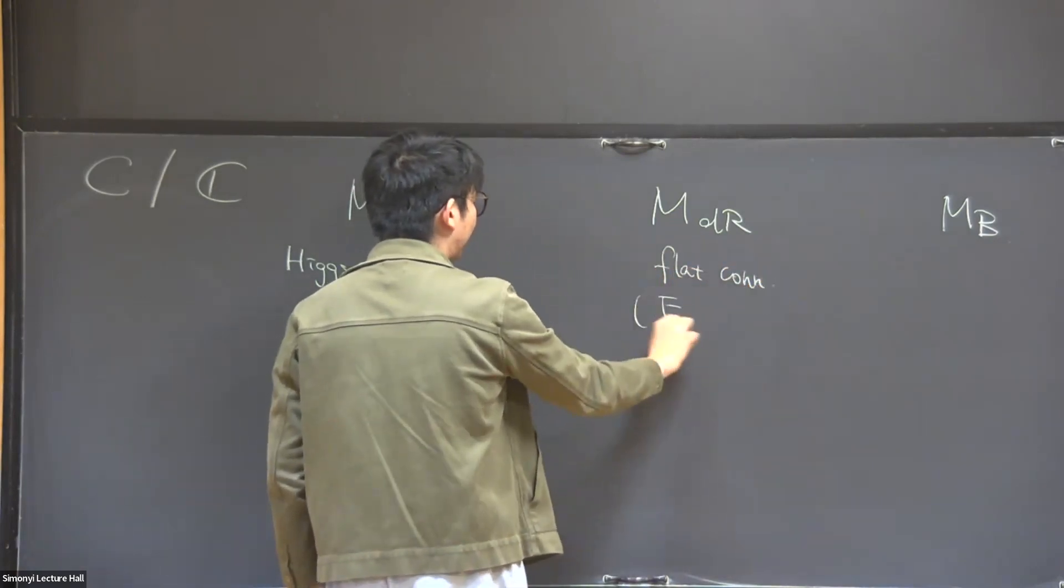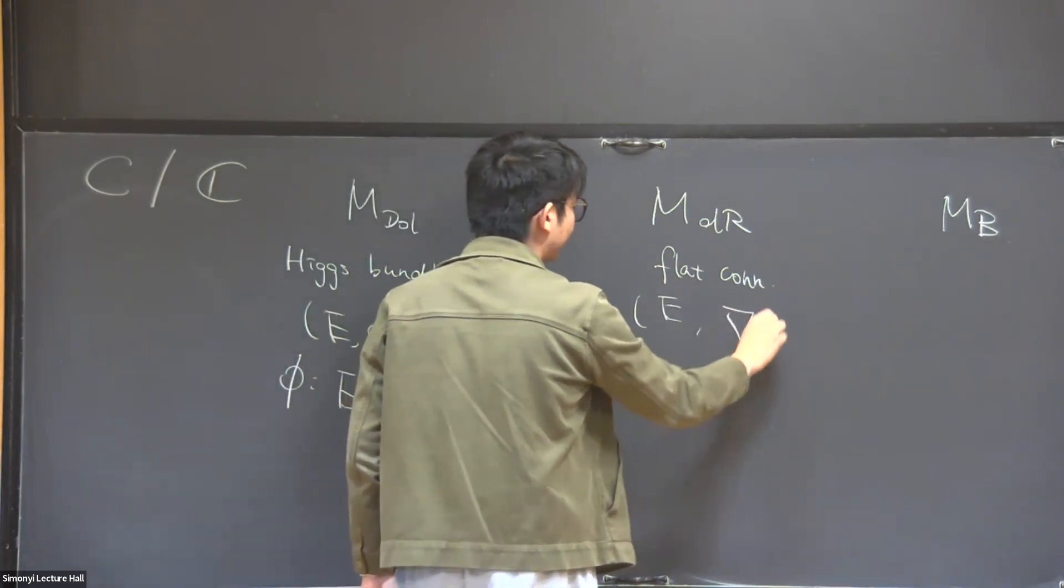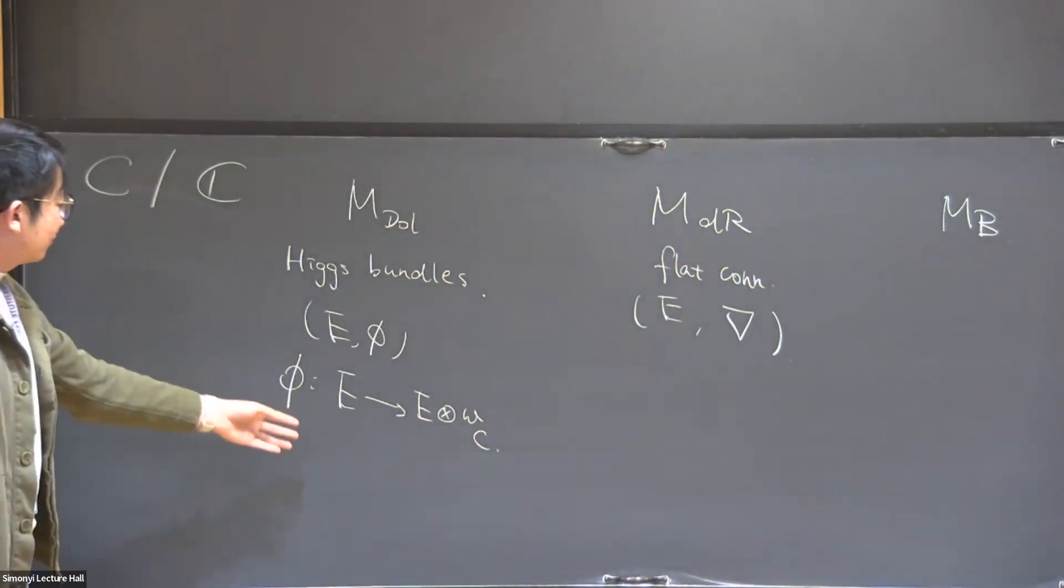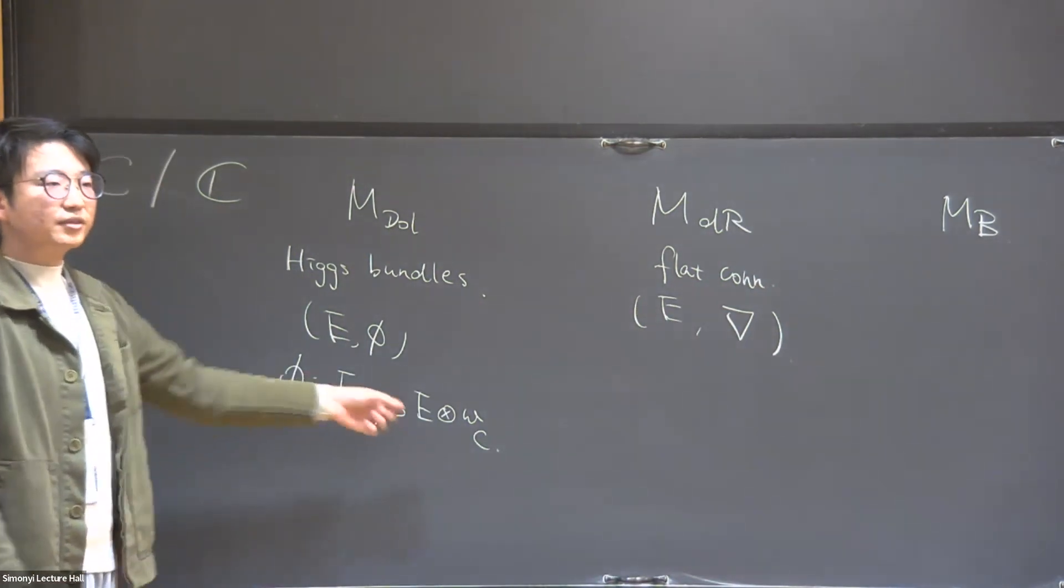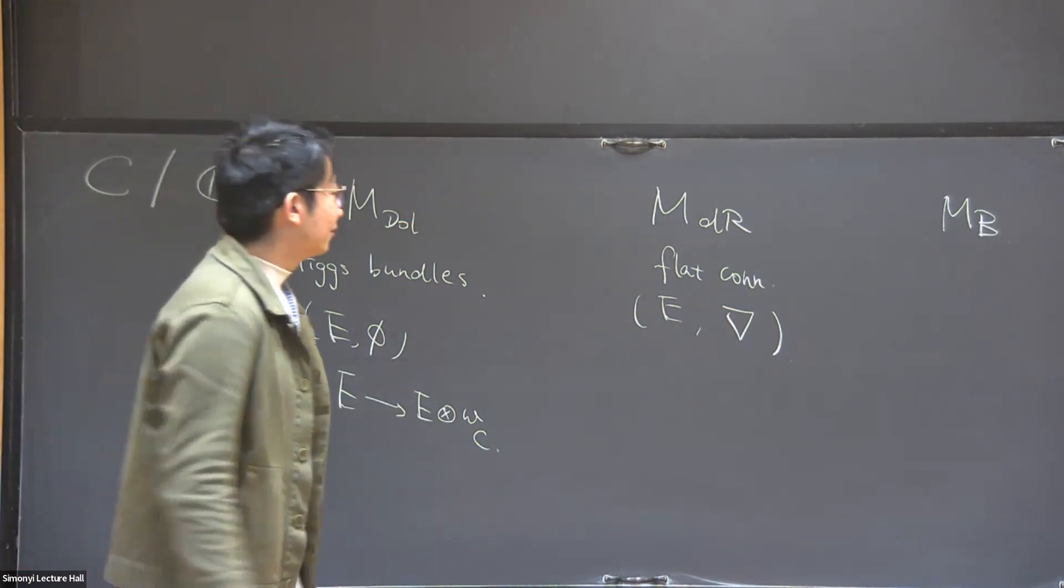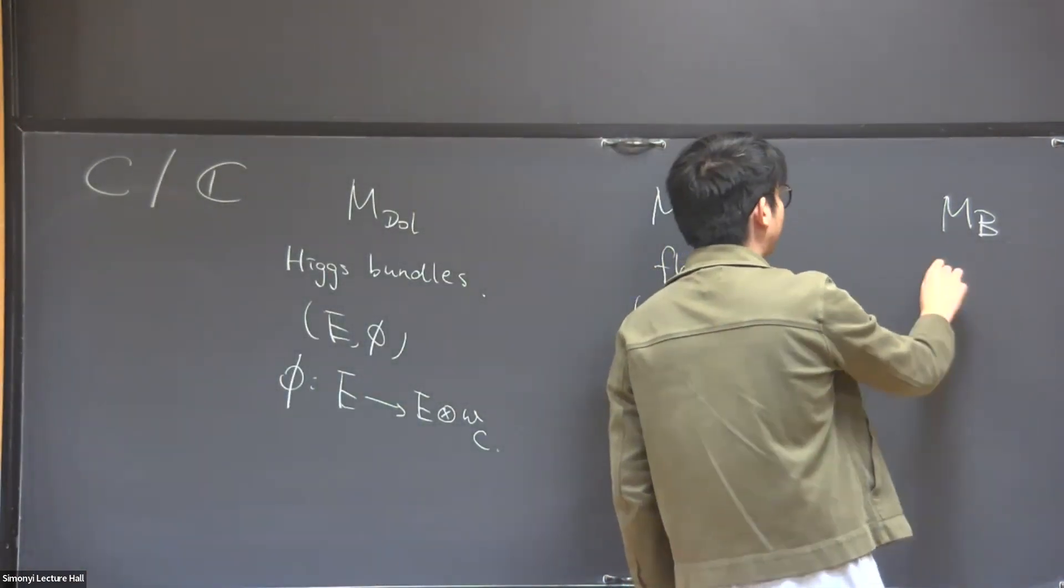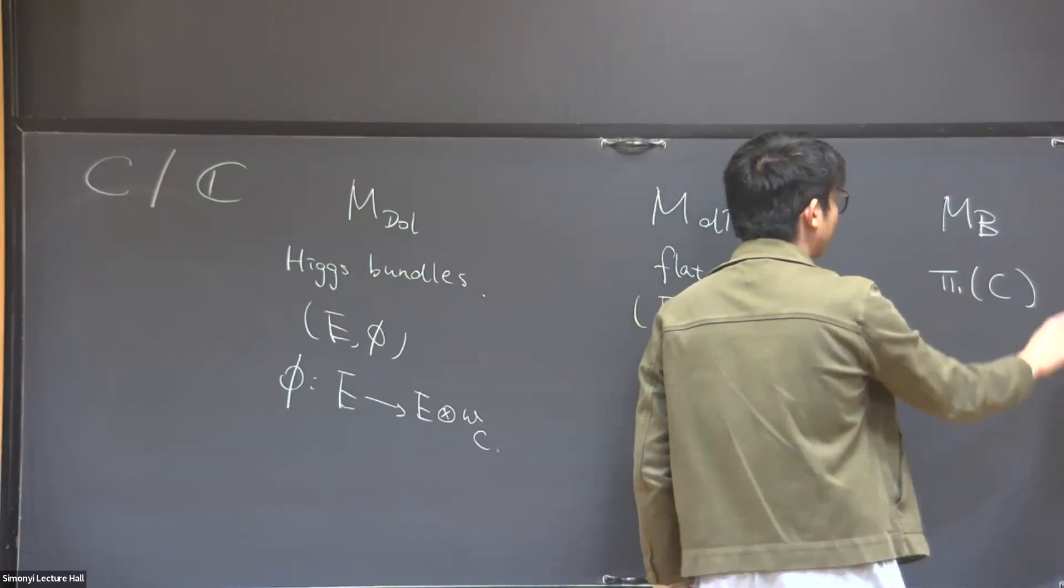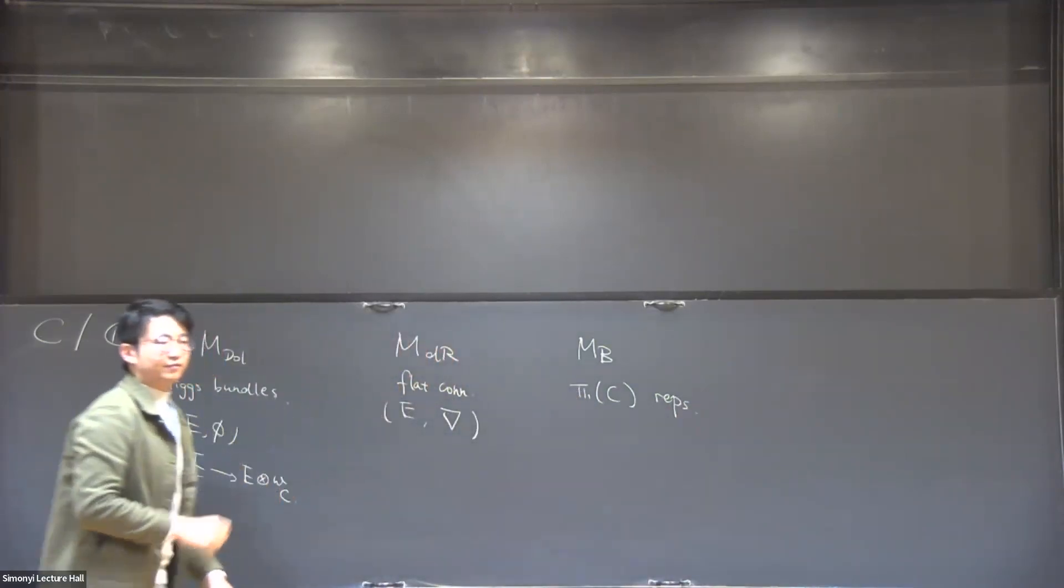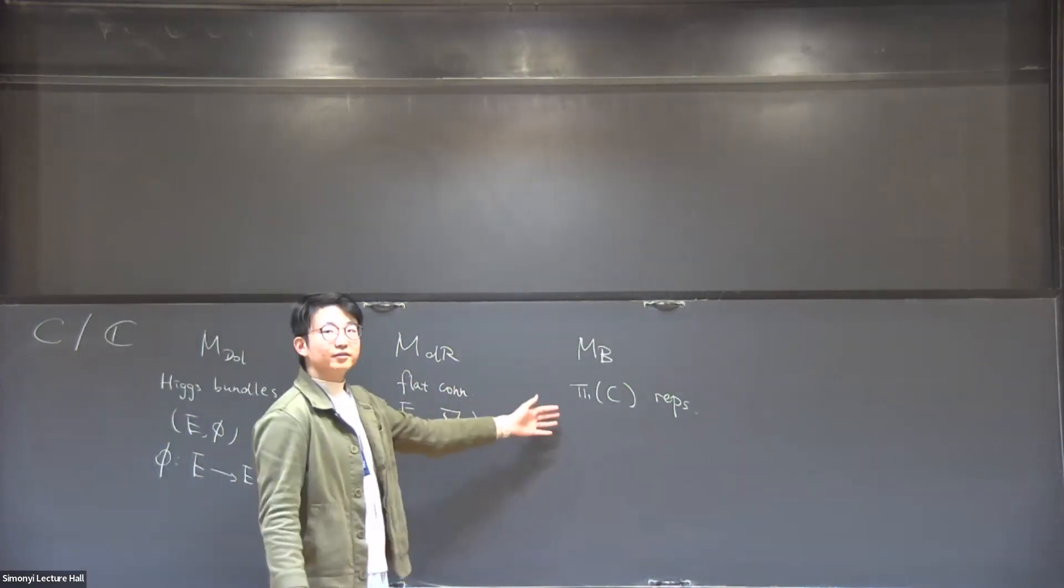The de Rham moduli space parameterizes flat connections. They are given by the same, a vector bundle, and then a flat connection. A flat connection is also a morphism of this form but it is not O_C linear but only C linear and satisfies a Leibniz rule. And the Betti moduli space parameterizes the representations of the fundamental group of the curve, in other words, the Betti moduli space parameterizes the local systems on the curve.